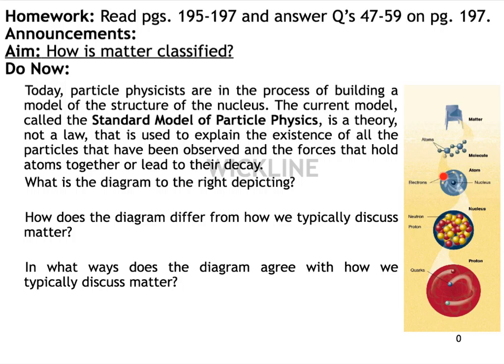Here's the book work associated with this lesson. It's on questions 47 through 59 on page 197, and our aim is: how is matter classified? That's really what the standard model of particle physics will try to accomplish. This flowchart is what is going to centralize your thinking for these three questions: what is the diagram depicting, how does it differ from how we typically discuss matter, and in what ways does it agree? Try to figure out what the diagram is saying, and we'll answer these three questions together in class tomorrow.